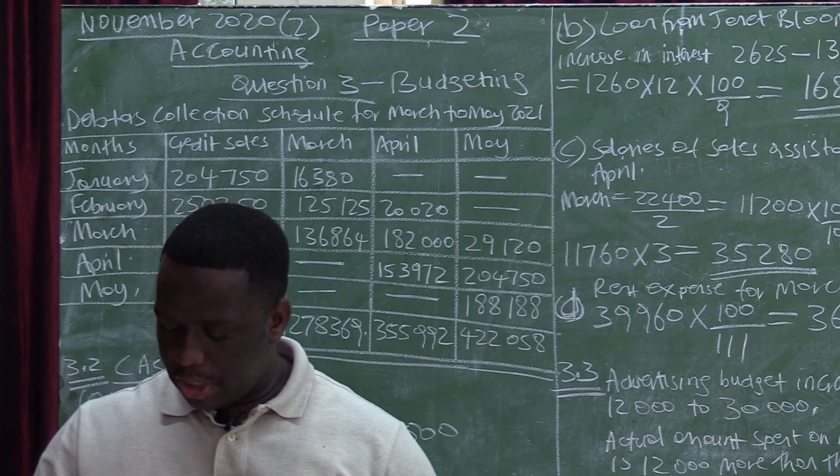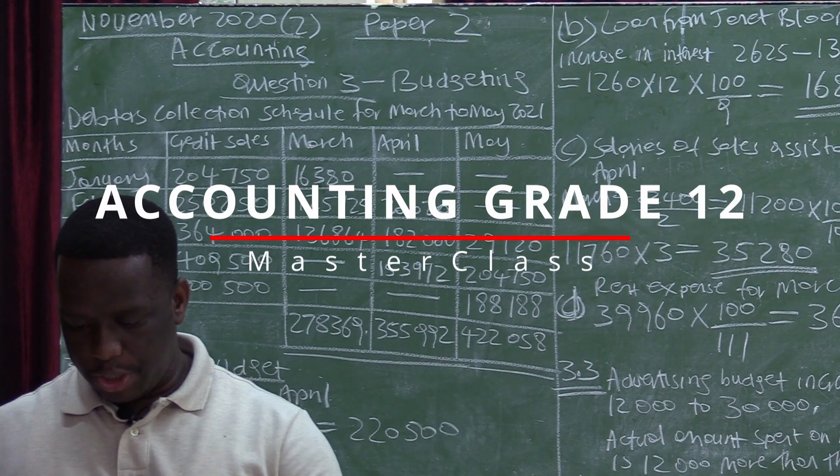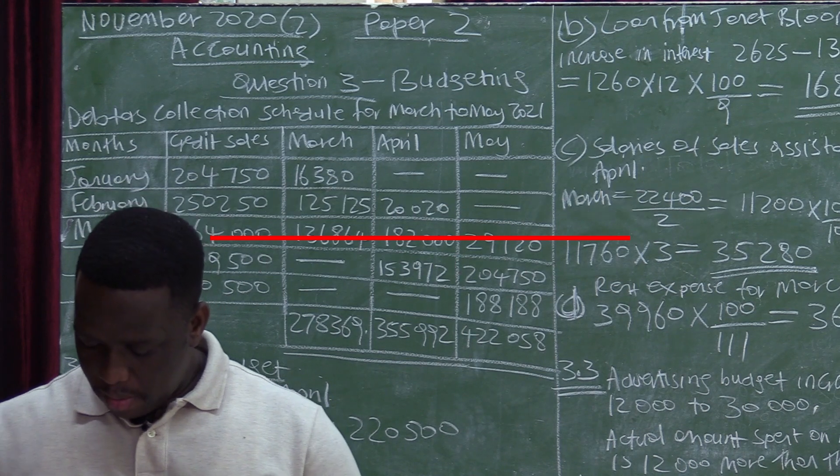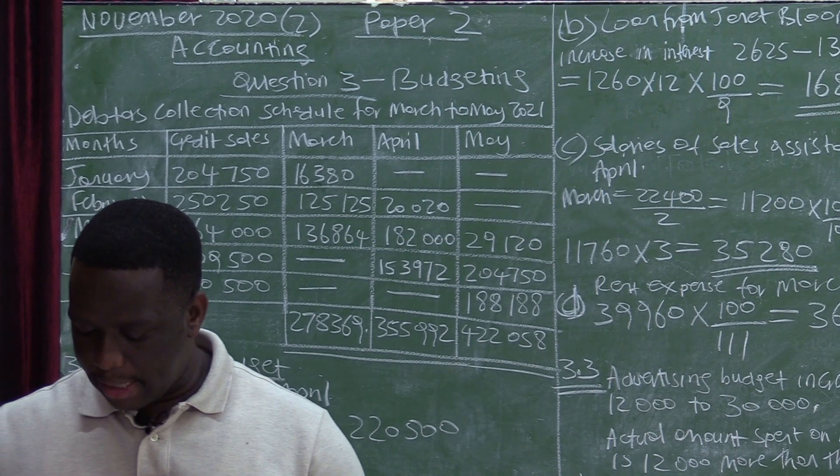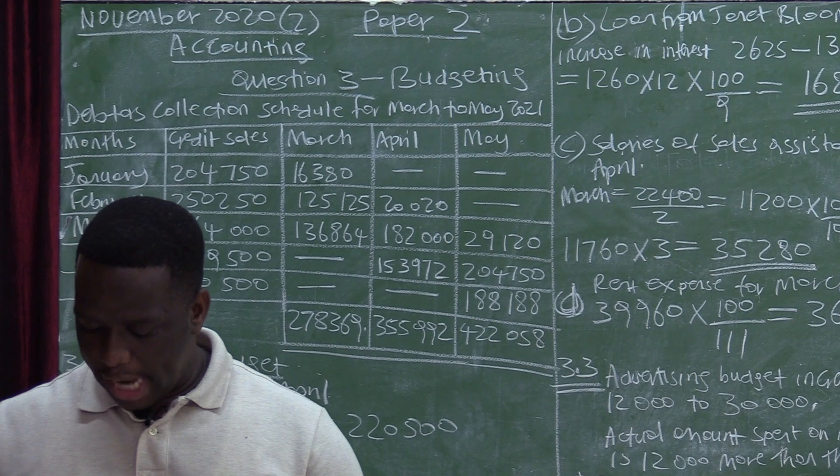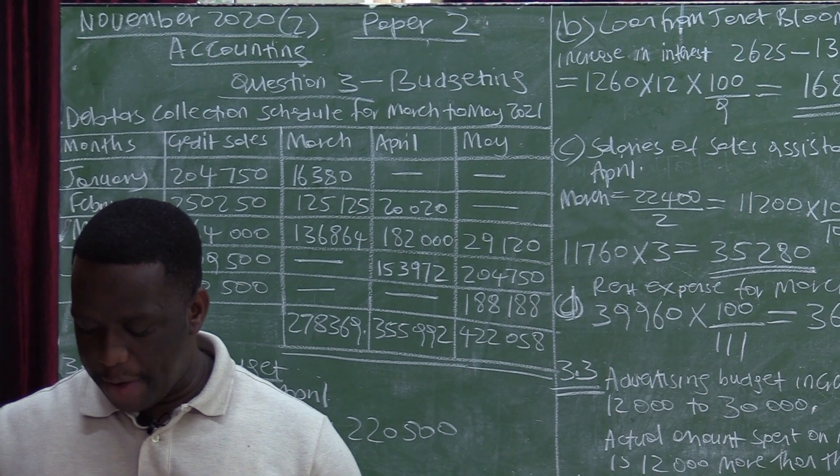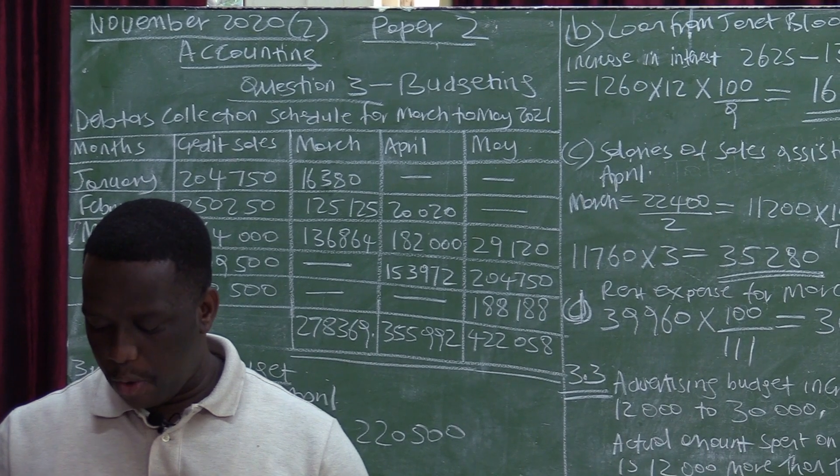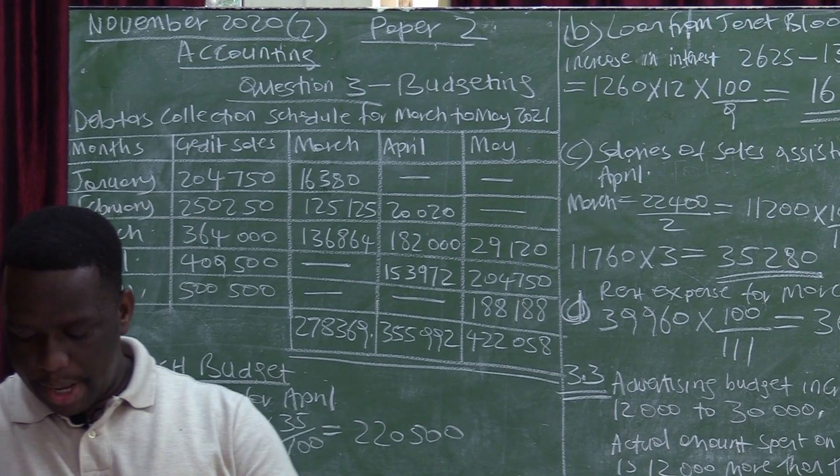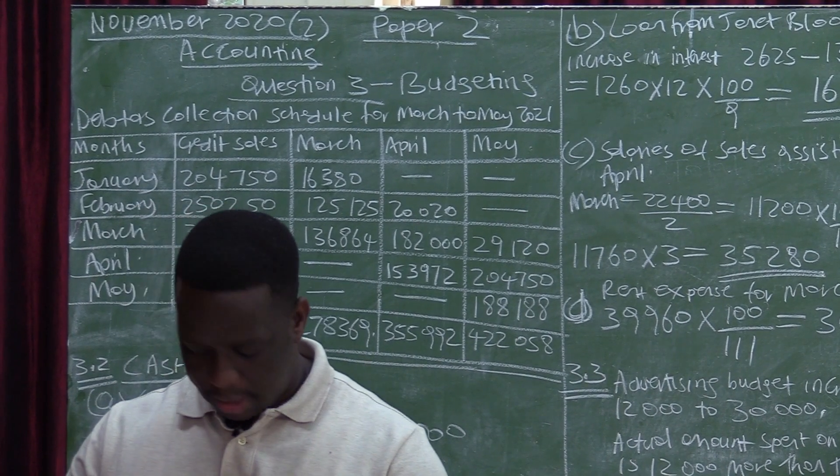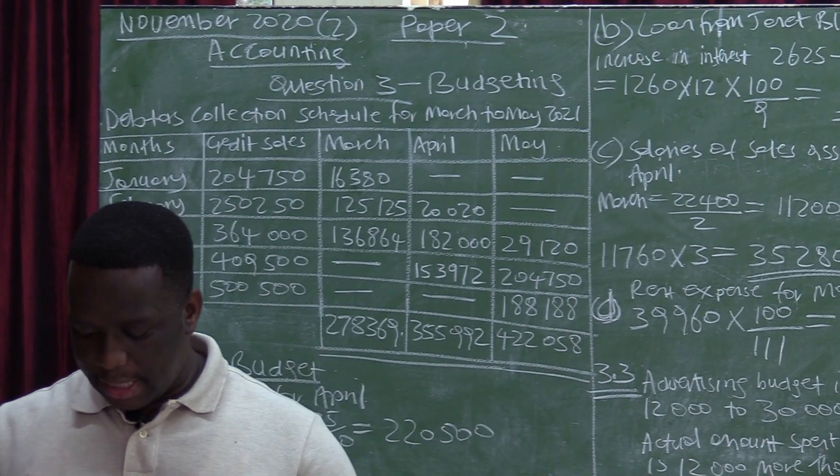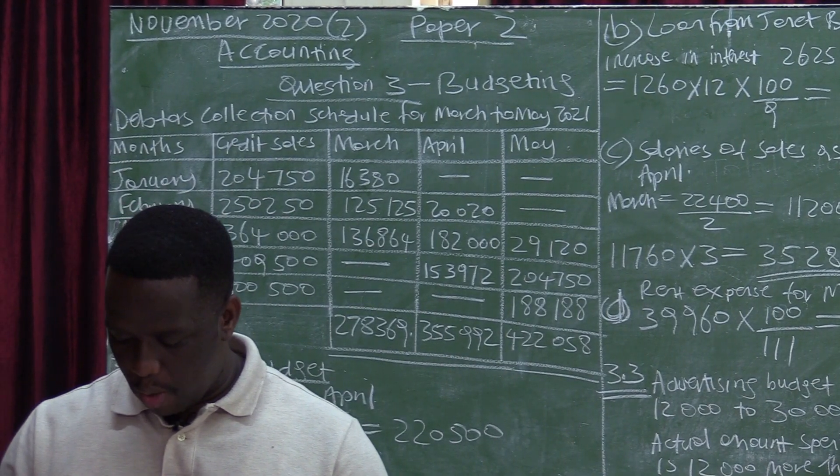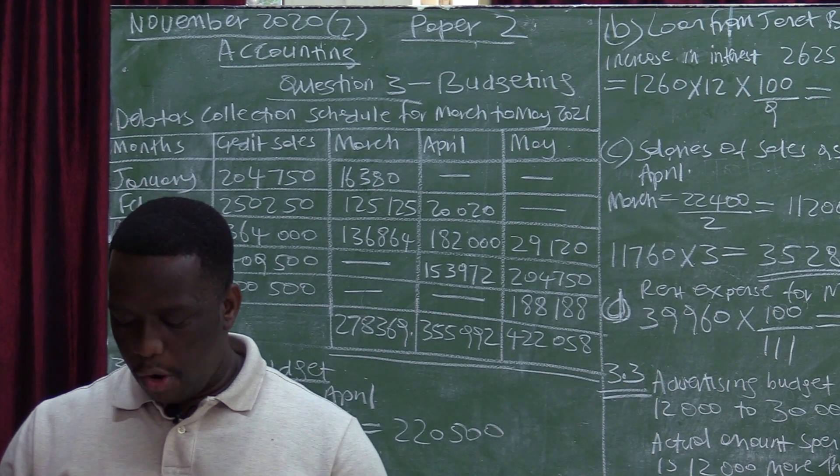3.4, which is the last question under question 3. It's with regards to Rental and Customers. We are told to refer to information F and H. Rental and Customers, the owners of the property Propco LTD informed the directors of Blossom LTD